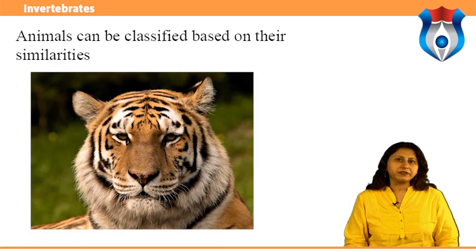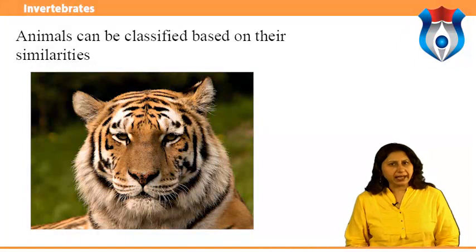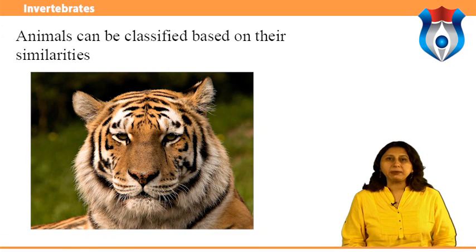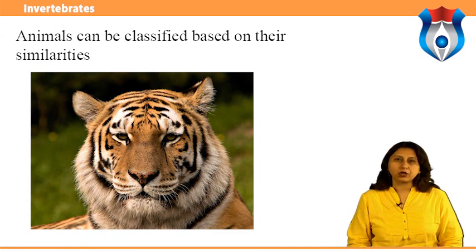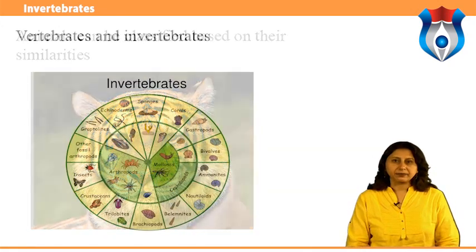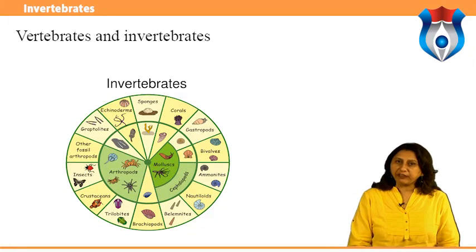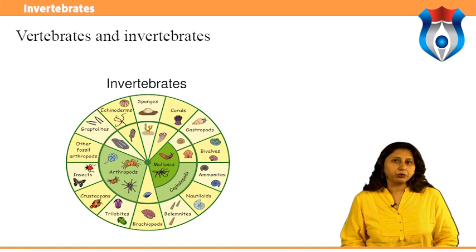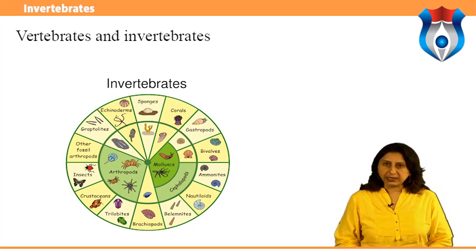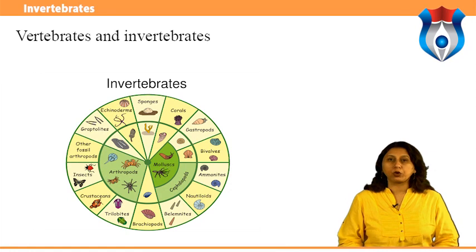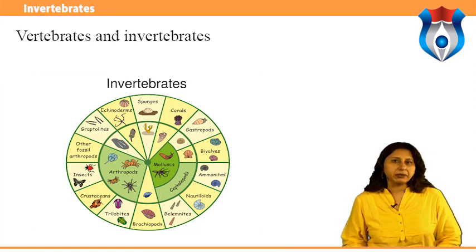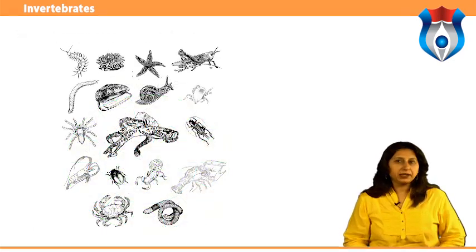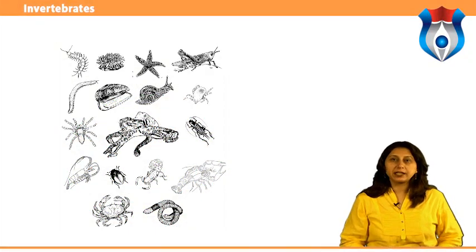There are many different types of animals in the world. Many animals are quite similar to each other; others are quite different. Animals can be classified based on their similarities, such as whether or not they have a backbone. Animals with a backbone are called vertebrates; animals without backbones are called invertebrates. Over ninety-seven percent of animals are invertebrates.